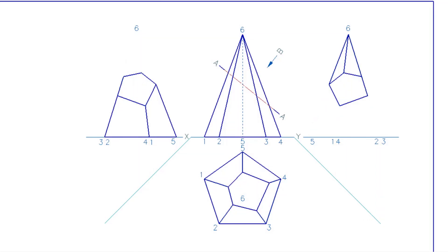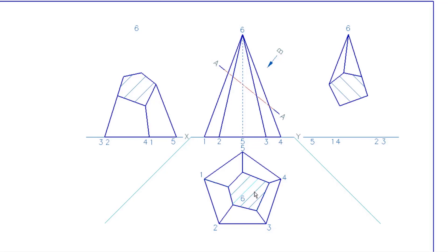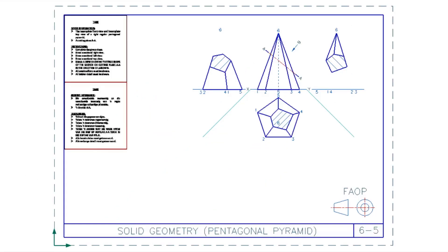The views are now complete — right view, left view, and top view. Because these surfaces have been cut, you have to indicate them with hatching. Add hatching at 45 degrees, about one centimeter apart on the right and left views. For the top view, change the direction of hatching and reduce the gap to about seven millimeters to differentiate it.